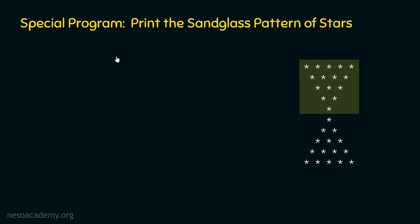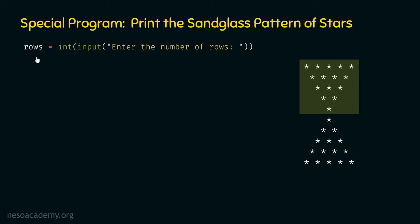Let's ask the user to enter the number of rows. We can use the input method as the argument to the int method, which will return the integer equivalent of the value provided by the user. We write: rows equal to int(input('Enter the number of rows')). We will provide the integer equivalent of that value to the rows variable. After receiving the value, we are ready to write our main program.